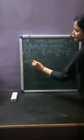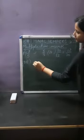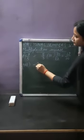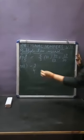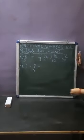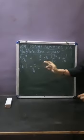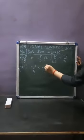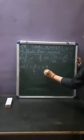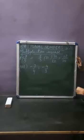Third part: if I am taking minus 3 upon 4, what will be the reciprocal of this? It is minus 4 upon 3.